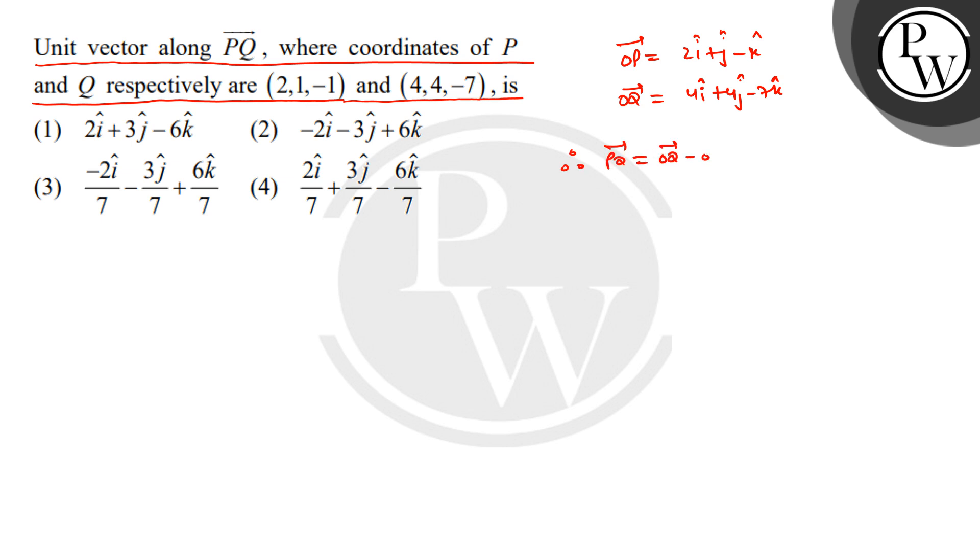minus OP vector. So PQ = OQ - OP = (4i + 4j - 7k) - (2i + j - k) = 2i + 3j - 6k. Therefore, the unit vector along PQ will be equal to PQ vector divided by magnitude of PQ vector.